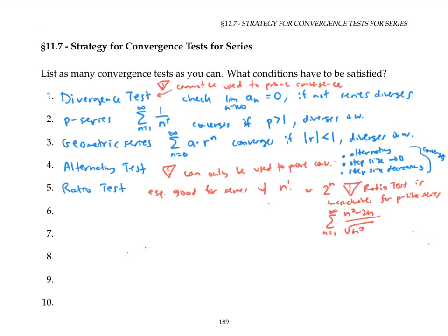If the ratio test is not a good candidate or ends up being inconclusive, what I might try next is one of the comparison tests. So that would be like what I call the ordinary or the limit comparison test. We generally want to compare to series that we know a lot about, that we know the convergence status of. So we would generally want to compare to either p-series or geometric series.